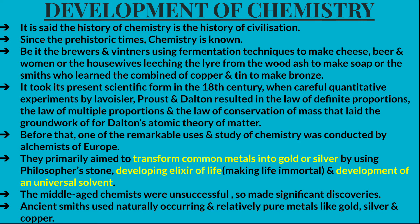Before the 18th century experiments by Lavoisier, Proust, and Dalton, some experiments were done by alchemists of Europe. These alchemists primarily aimed to transform common metals into gold and silver using the philosopher's stone, and to develop an elixir of life — making life immortal. They also tried to create a universal solvent.